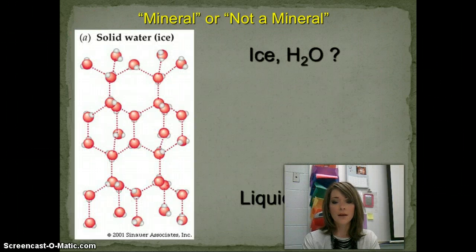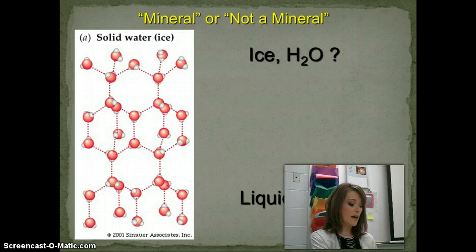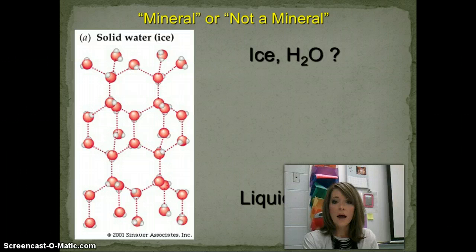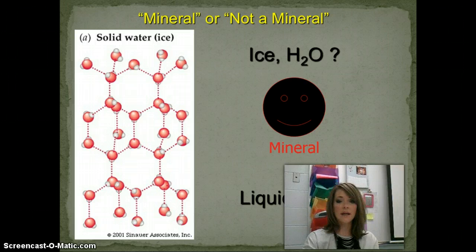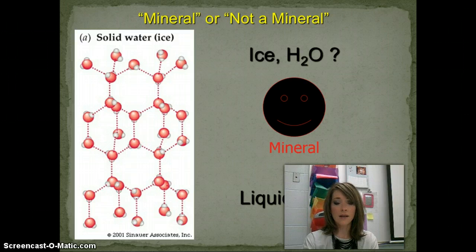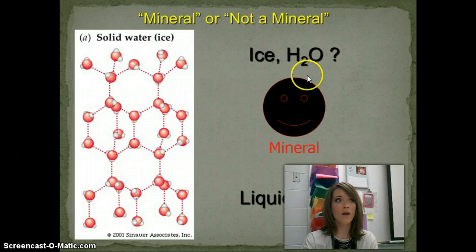How about ice, H2O? Ice is a mineral because it meets all the characteristics of a mineral. It's naturally occurring, it's inorganic, it's a solid, it has a crystal structure — you can see that in the atoms — and it has a definite chemical composition of H2O.